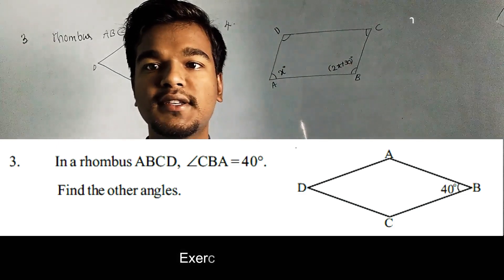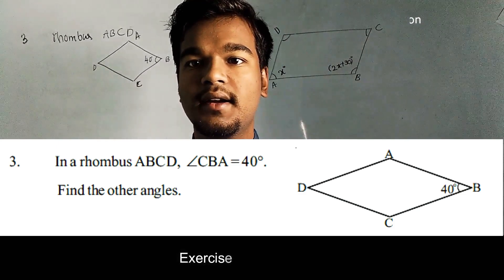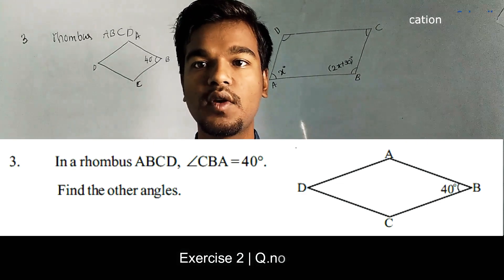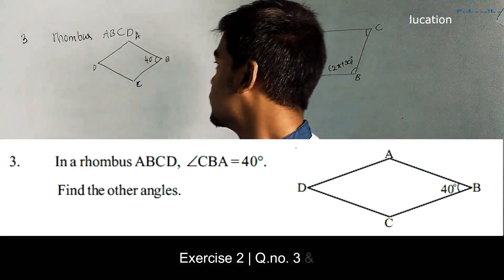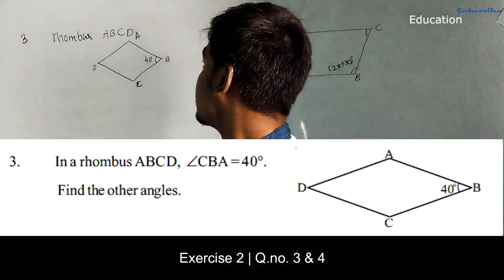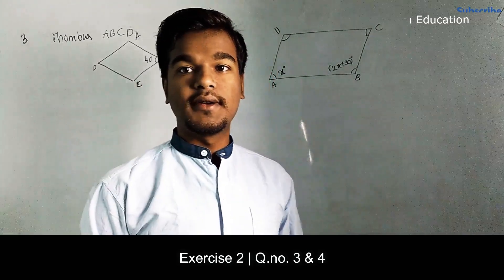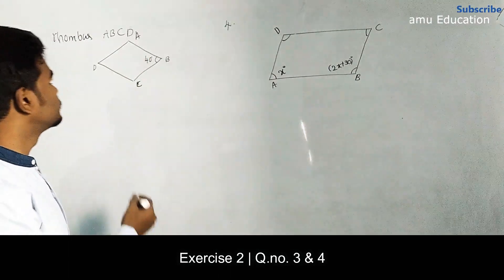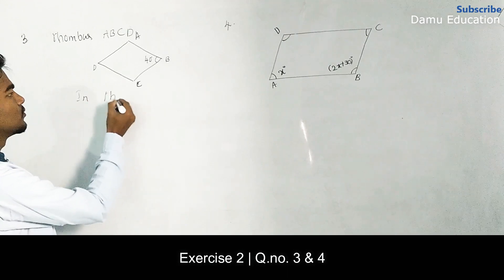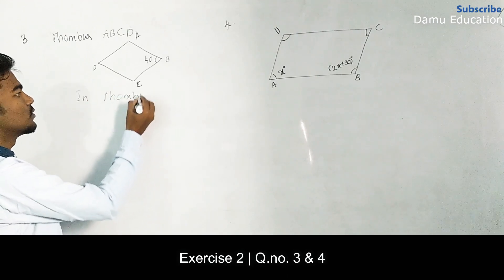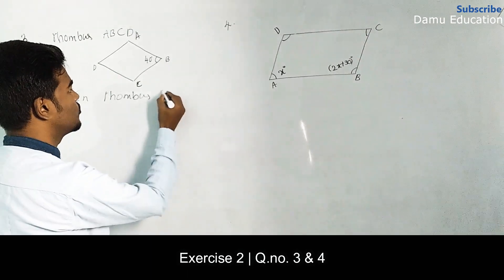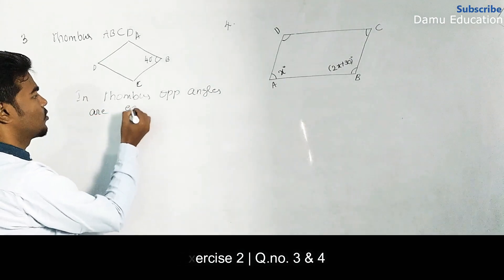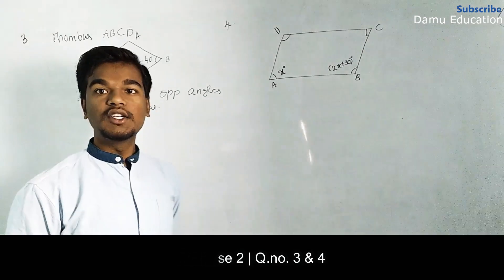Hello viewers, in this module we are going to discuss the solutions for exercise two, third and fourth questions. We are given one quadrilateral that is rhombus ABCD. One angle is given as 40 degrees, and in a rhombus, opposite angles are equal.